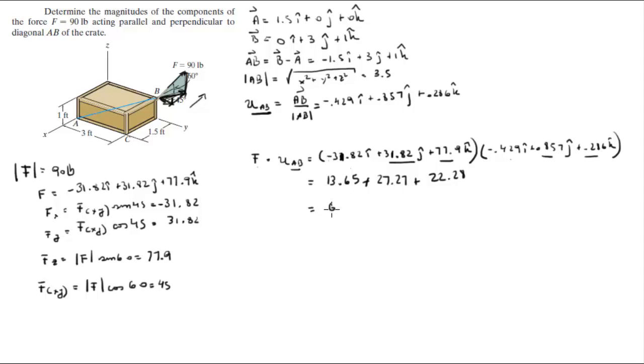When you add this together, you get that the projection is equal to 63.2. That's the projection along AB, so let's call it F along AB. Now this is F along AB.